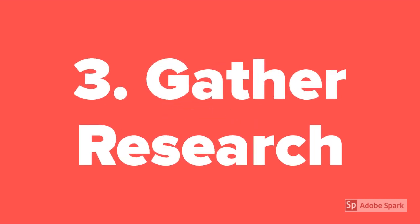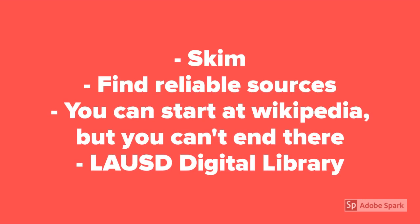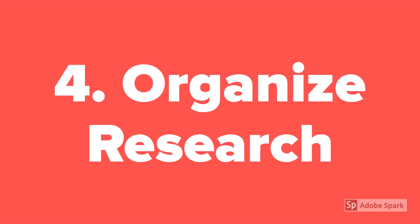The third step is to gather research. While you're gathering research, you don't want to read every single word of every single source you come across — I'll give you guidance throughout the research process. Generally, when you're researching you can skim your sources. You need to find reliable sources. You can start at Wikipedia, but you can't end there and cite it in your paper. Wikipedia can help you find key terms to research later, but it will not be a good or reliable source to cite. I will show you the LAUSD digital library, an online library the school district provides, and we'll have some practice using that. After gathering your sources, you'll want to organize the research so you can have cohesive themes to refer to in your paper.